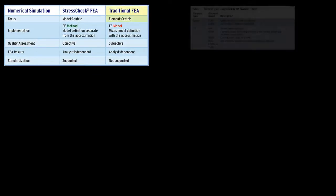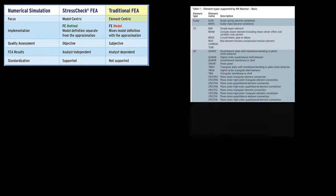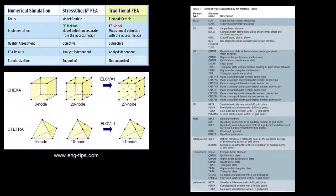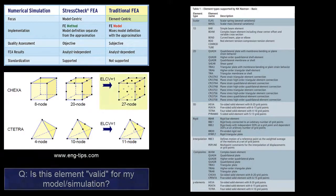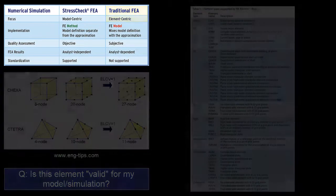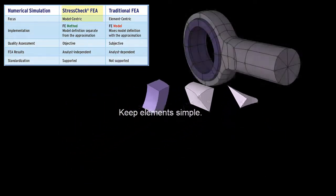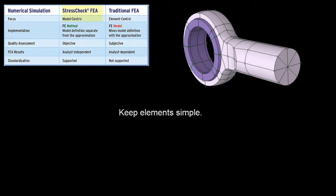The focus of traditional FEA packages is on element libraries, which can become vast and confusing. Additionally, many of these elements have limited range applicability, forcing the engineer to make tough decisions as to when an element is valid. Not so with StressCheck, where the model is the focus and the elements are simply building blocks. We keep it simple because engineering is hard enough.